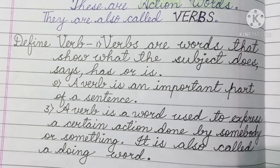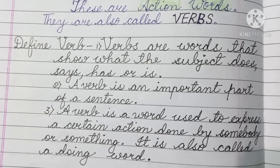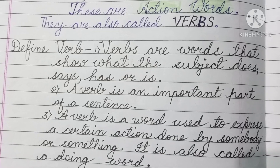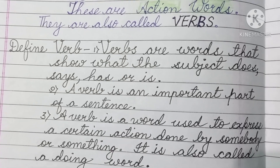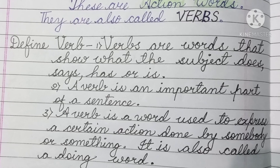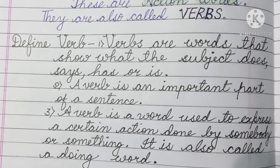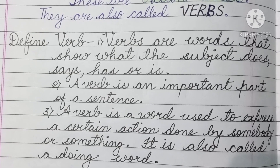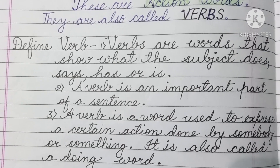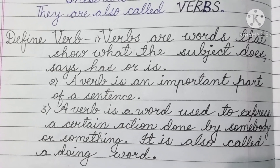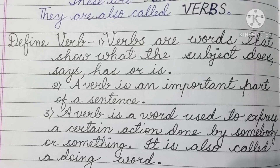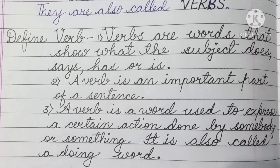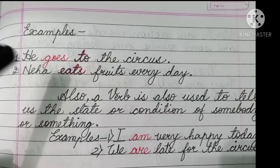Now let us define verb. Verbs are words that show what the subject does, says, has, or is. You should also remember: a verb is an important part of a sentence. Without a verb, a sentence cannot be complete. A verb is used to express a certain action done by somebody or something. It is also called a doing word.